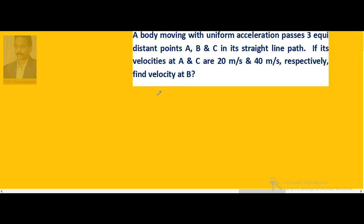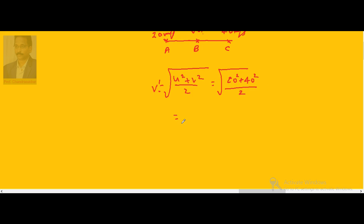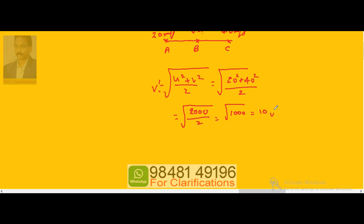A is the initial point, B is the midpoint, and C is the final point. At A the velocity is 20 m/s and at C it is 40 m/s. Using v' = √((u² + v²) / 2): v' = √((20² + 40²) / 2) = √((400 + 1600) / 2) = √1000 = 10√10 meters per second.